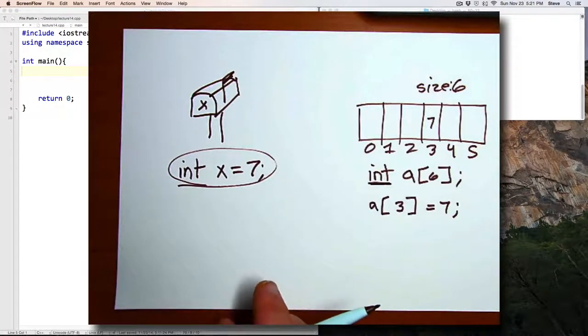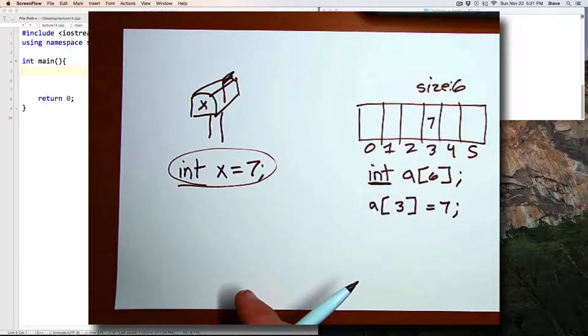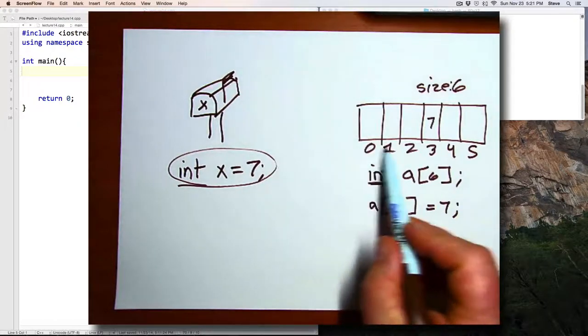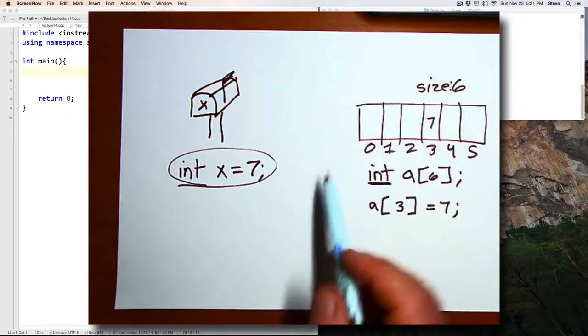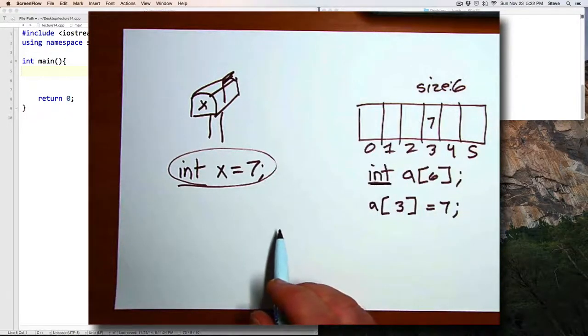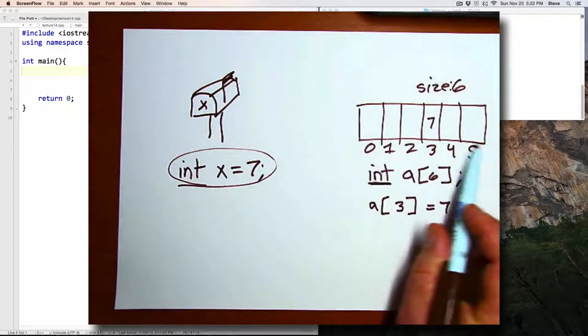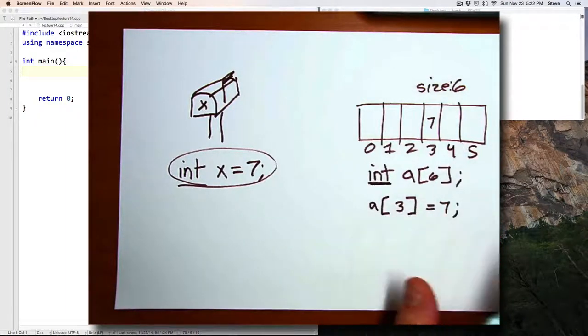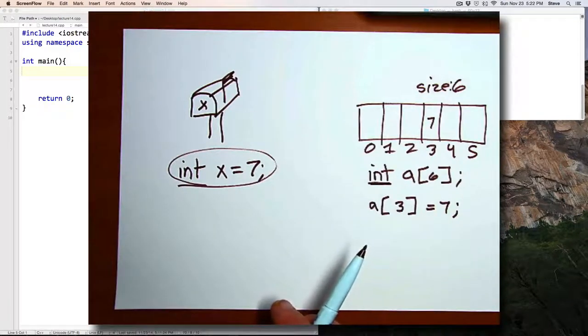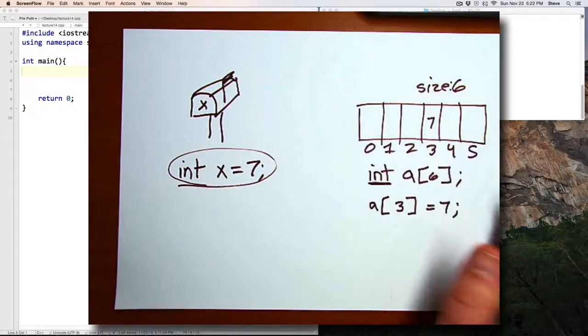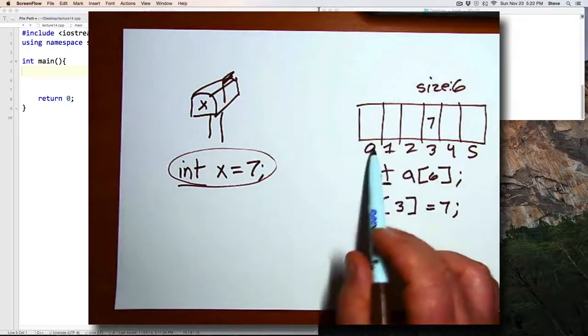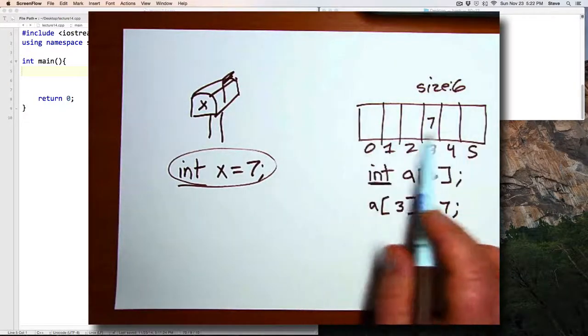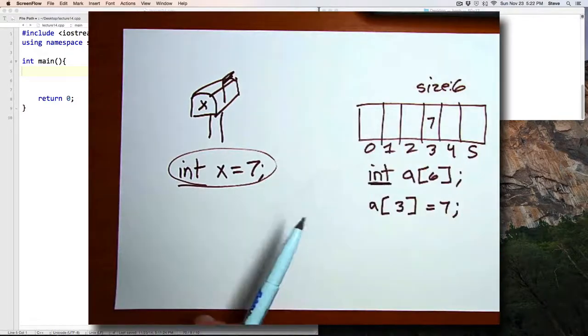The difference is that arrays are more primitive, so that makes them maybe easier to understand how they work. And vectors are more modern or more powerful, which makes them maybe a little bit harder to understand how they work, but easier to use. One primary difference between arrays and vectors is that with arrays, you have to specify exactly how many positions you want. And with a vector, you don't have to do that. If you decide later on that you need more room, it will just take care of allocating for that.